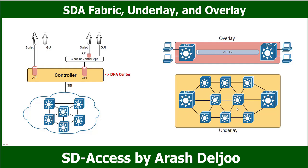The fabric is the combination of underlay and overlay, which together provide all features to deliver data across the network with the desired features and attributes. In the underlay we have devices and connections; over this underlay we have the overlay; and the combination of underlay and overlay is our fabric. We also have the DNA Center controller for configuration, management, troubleshooting, and other functions over the fabric.